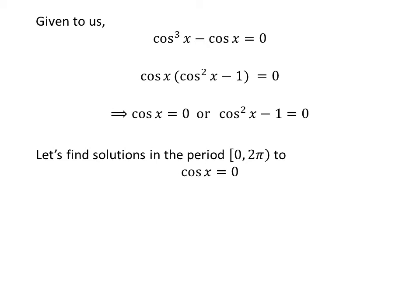Let us first find the solutions to cos x = 0 in the period [0, 2π], as cosine is a periodic function with period 2π. We know cos(π/2) = 0 and cos(3π/2) = 0.